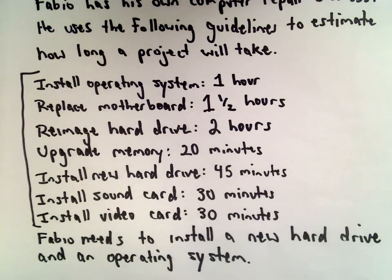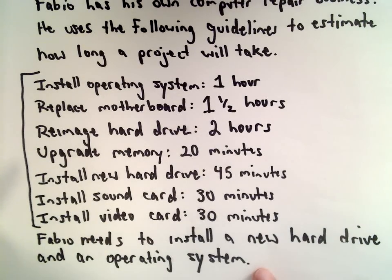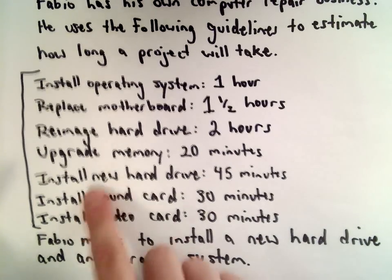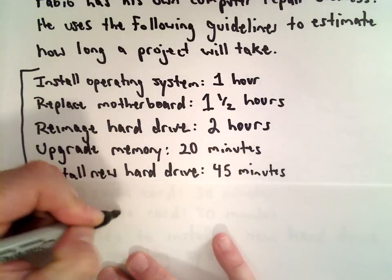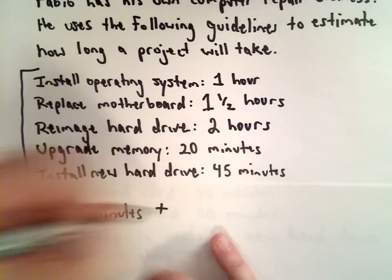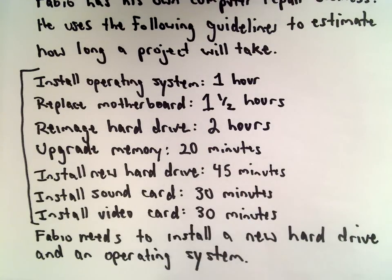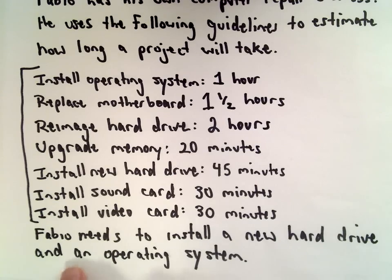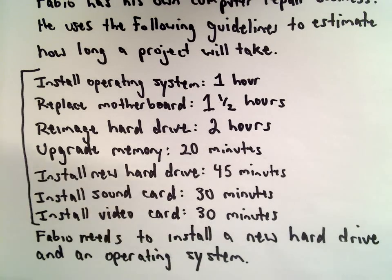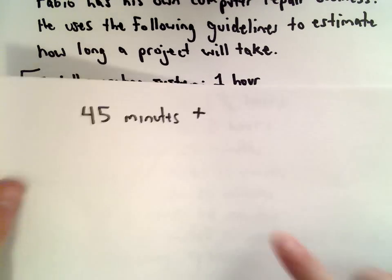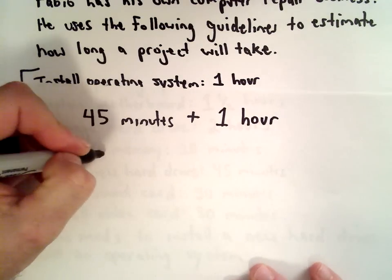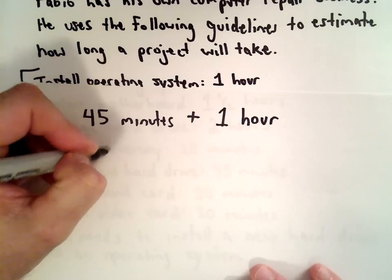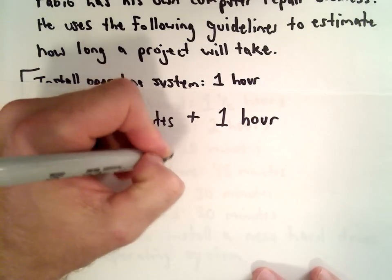How long is it going to take him? To install a new hard drive, it takes 45 minutes. He also has to install a new operating system, which takes one hour. So the total amount of work is going to be one hour and 45 minutes.